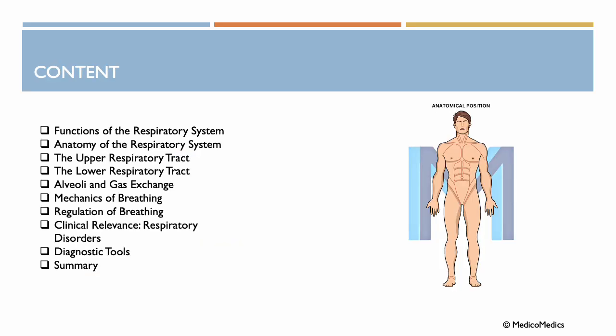In this lecture, we will talk about the functions and anatomy of the respiratory system. We will discuss the upper and lower tracts, alveoli and gas exchange, mechanics of breathing, regulation of breathing, clinical relevance — some respiratory disorders, some diagnostic tools — and end with a summary.